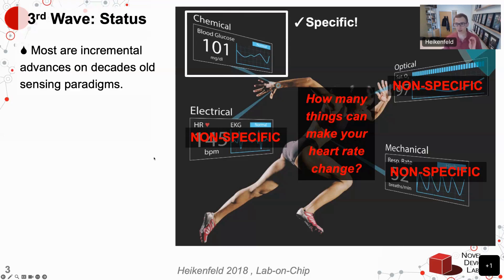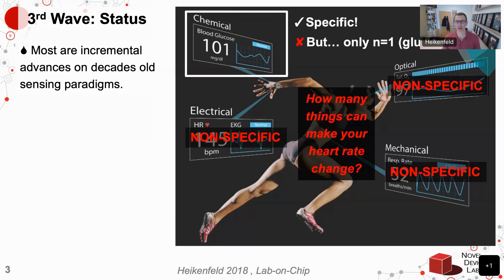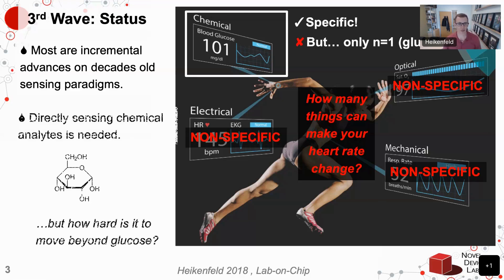If you want specificity, a great example of something very specific is glucose monitoring. That is biochemical monitoring because it is a sensor that directly measures the concentration of something circulating inside your body — a very specific measurement. The challenge, though, is that it is an N of 1 success — it is the only success. So the question is, how do you move beyond glucose? Direct chemical sensing is needed for most things where you want to be really specific about what you're measuring.